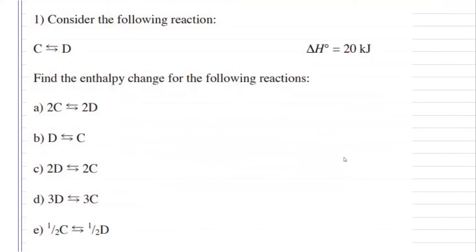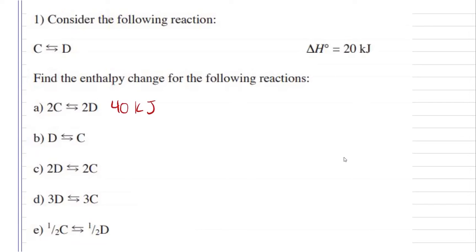For number one, it says consider the following reaction where C going into D, and we are told that our enthalpy for that reaction is 20 kilojoules. We can use that information to find the enthalpy change for the following reactions. For 2C into 2D, well that's just going to be twice as much as the original reaction, so we can just multiply our enthalpy by 2, so we get 40 kilojoules for that reaction.